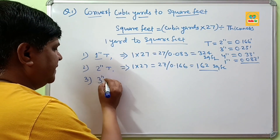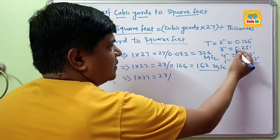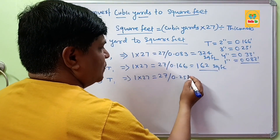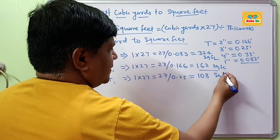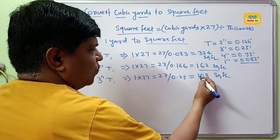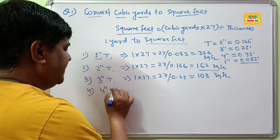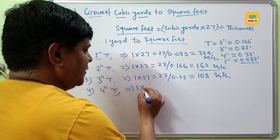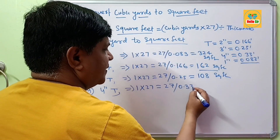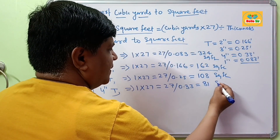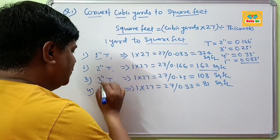At 3 inch thickness: 1 × 27 = 27, and 3 inches equals 0.25 feet. When you divide 27 by 0.25, you get about 108 square feet. So 1 cubic yard equals 108 square feet at 3 inch thickness. And if your project thickness is 4 inches, then 1 × 27 = 27, and 4 inches equals 0.33 feet, giving about 81 square feet. So 1 cubic yard equals 81 square feet at 4 inch thickness.